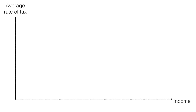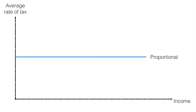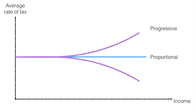This graph represents the different average rates of tax for each type of tax and how they change as income rises. As mentioned earlier, proportional tax remains equal to the average rate of tax throughout all levels of income. The average rate of tax increases as income rises with progressive taxes. And finally, regressive taxes tend to have lower average rates of tax for higher income earners.